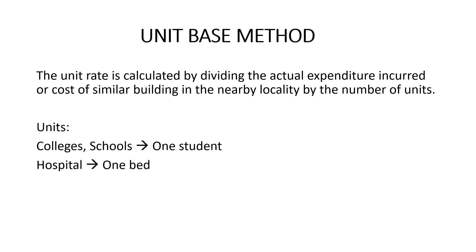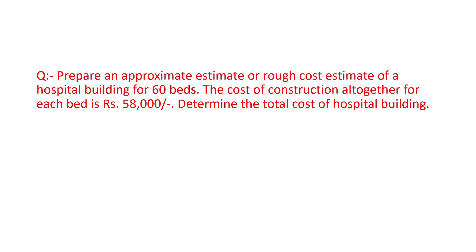Let's take an example for better understanding. Prepare an approximate estimate or rough cost estimate of a hospital building for 60 beds. Here the unit is bed, so we have a total of 60 units. The cost of construction for each bed is 58,000. Determine the total cost of the hospital building.